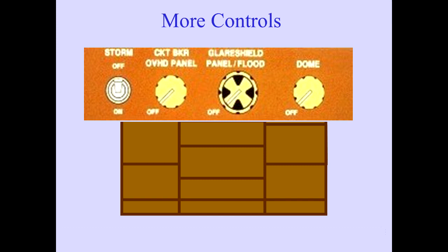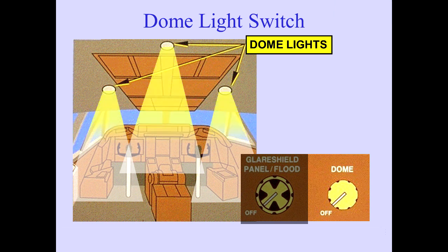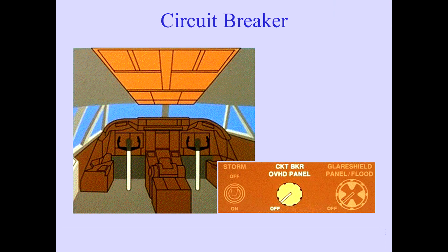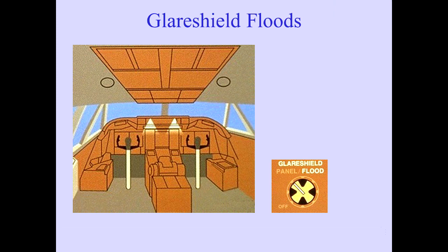Controls for storm, circuit breaker, glare shield, and dome lights are located on the overhead panel. The dome lights rotary switch regulates three dome lights and varies their intensity. The circuit breaker and overhead panel rotary control regulates lighting for the circuit breaker panels and overhead panel indicator lights. The outer portion of the glare shield panel flood rotary control regulates glare shield integral lighting and the standby magnetic compass light. The inner portion controls the glare shield flood lights and varies their intensity.